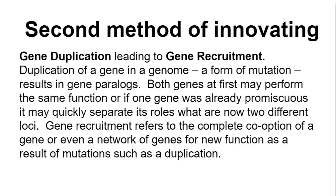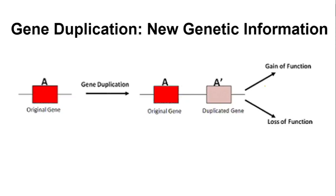We're going to dig into this with an example and go through some literature. Here's a figure that illustrates this: the original gene gets duplicated, so now you have a second version with the same exact sequence. There are different things that can happen — it could just lose its function, which happens very frequently. A mutation might knock out the function of the second gene, but the organism doesn't care because it still has a functioning original version. The other possibility is the duplicated gene can gain a new function, and that's what we're most interested in illustrating here.